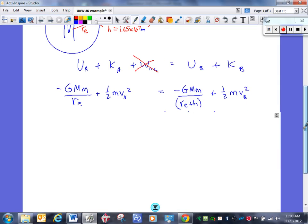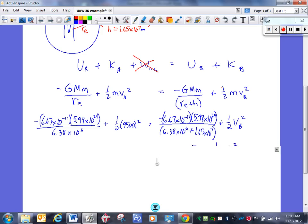So now we can start to put some numbers in. And here's what that looks like. G is 6.67 times 10 to the negative 11. Mass of the Earth. Oh, by the way, we can cancel out the mass of the projectile. That happens a lot in law of conservation of energy problems. They all have that lowercase m in them.